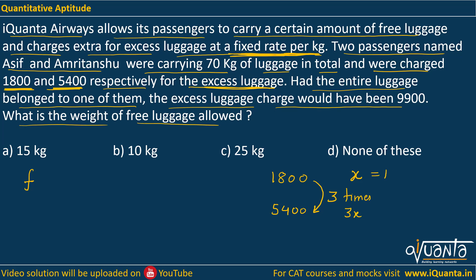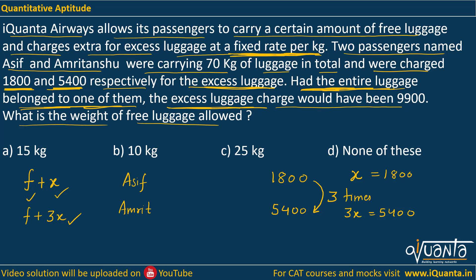We can confirm x by noting that 3x equals 5,400, so x equals 1,800 satisfies this. Now, had the entire luggage belonged to one of them, the excess luggage charge would have been 9,900. Asif is carrying f plus x total luggage, and Amritanshu is carrying f free luggage plus 3x excess luggage. If we give all this luggage to Asif, he will have f plus x plus f plus 3x, which gives us 2f plus 4x total luggage.